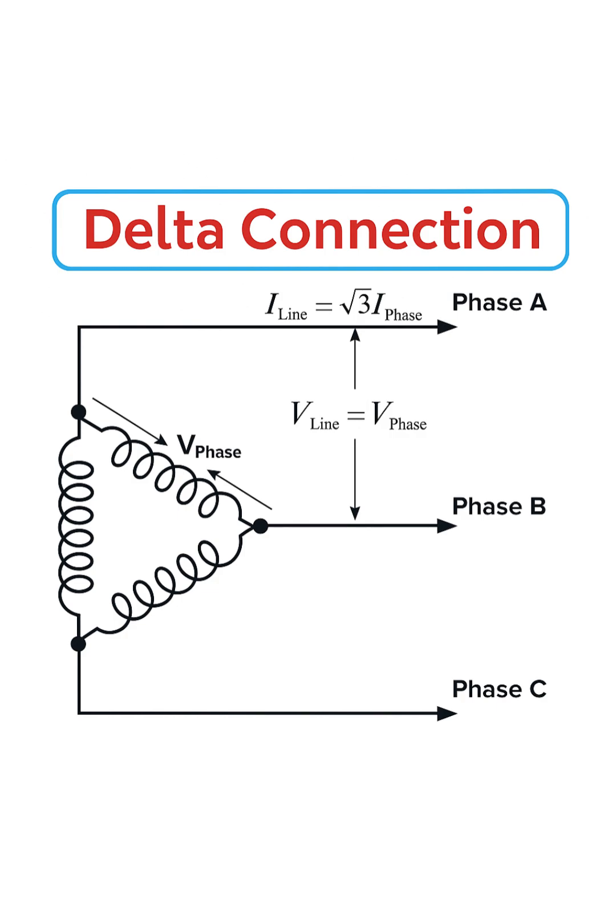In a delta connection, the line current is higher than the phase current. The specific relationship is that the line current is equal to the square root of three times the phase current. The square root of three is approximately 1.73.